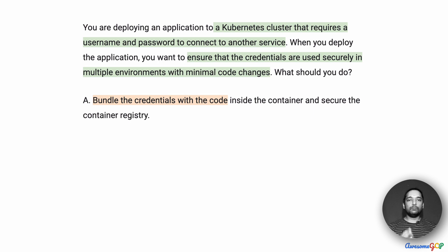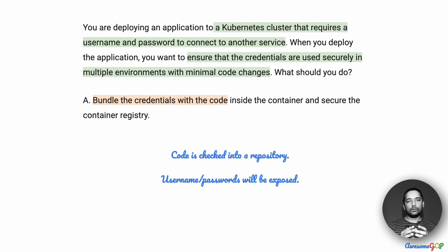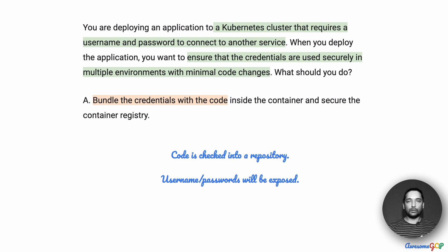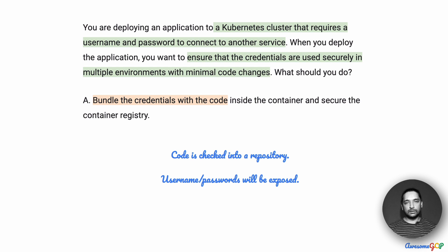Option A suggests that we bundle the credentials with the code inside the container and secure the container registry. But when you have code checked in and you have the credentials along with that code, it means essentially everybody who has access to the code repository can now see the username and passwords. That is not acceptable. Ideally, very few people on the team who have access to production systems should have access to these credentials.